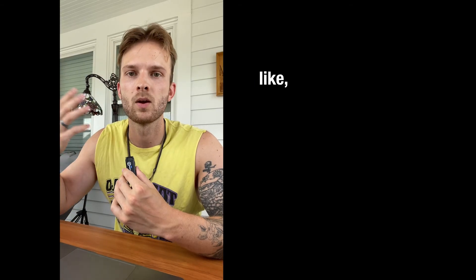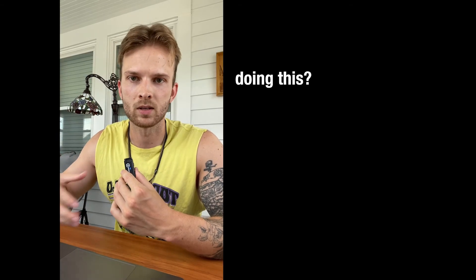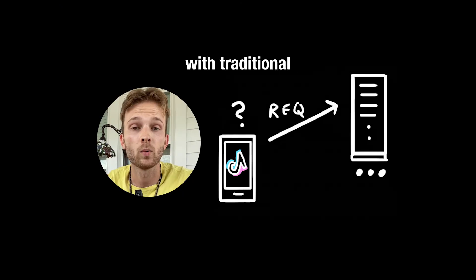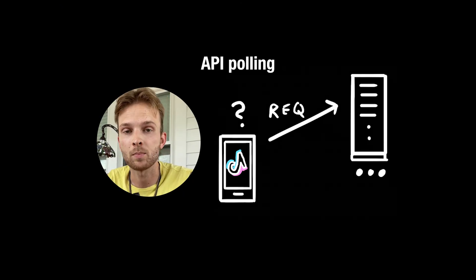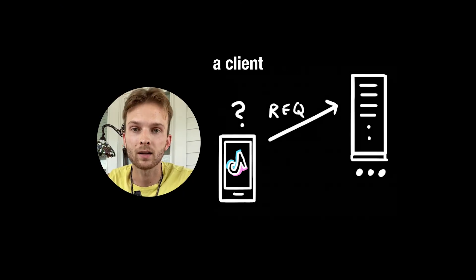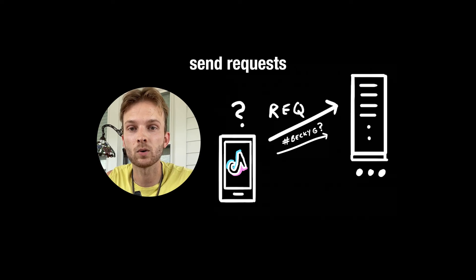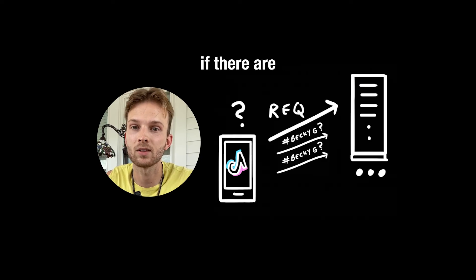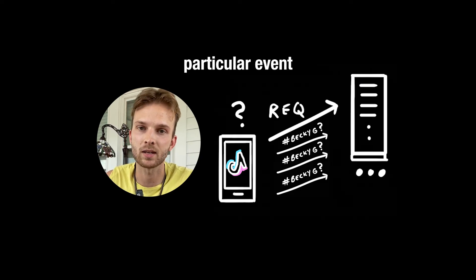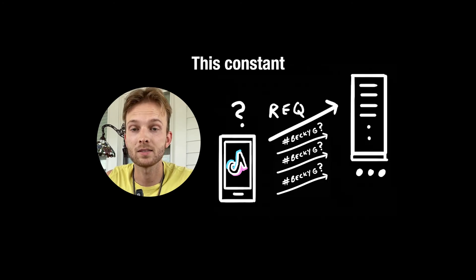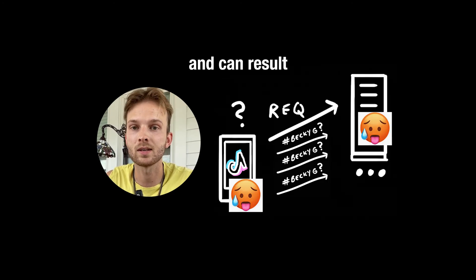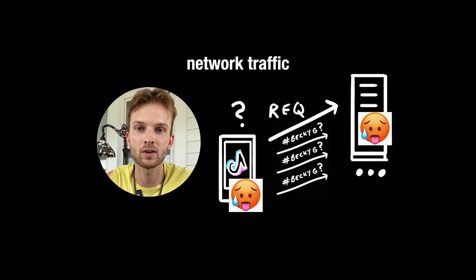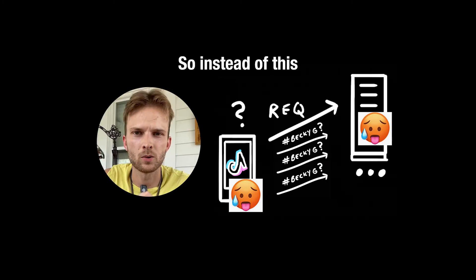So why bother doing this? Why not just use a traditional API? With traditional API polling, a client would have to repeatedly send requests to a server asking if there are any updates — to see if a particular event has happened. This constant checking consumes resources and can result in unnecessary network traffic when no updates are available.